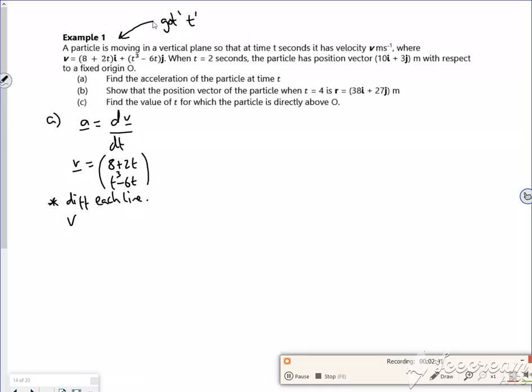So my acceleration, if I differentiate 8 plus 2t with respect to t, it's just 2. If I differentiate t cubed minus 6t, it's 3t squared minus 6. And that's my acceleration done.